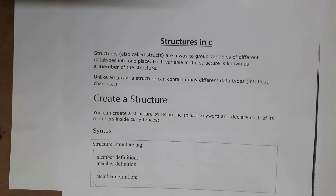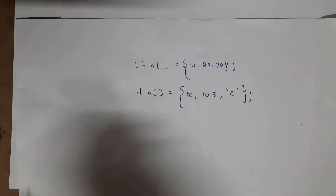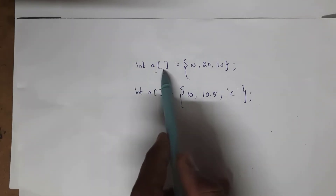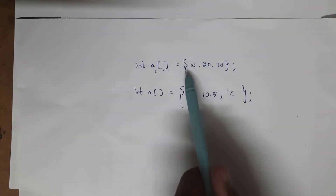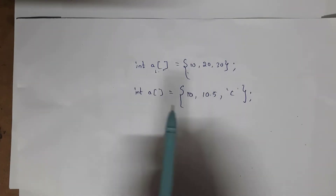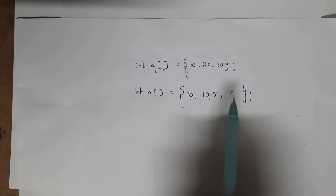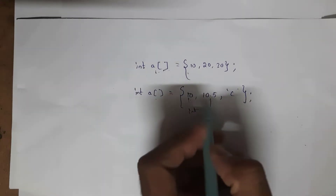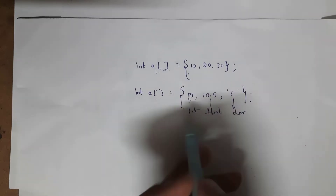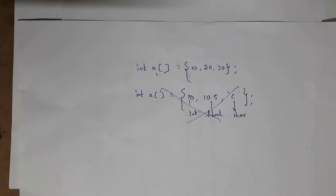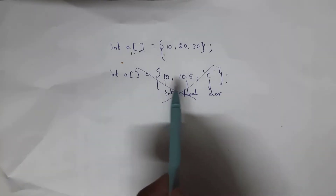If you consider arrays, in arrays we can store only similar type of elements. For example, if you write int a[], you can store only integer type of elements. I cannot store mixed type of elements. For example, int a = {10, 10.5, 'c'} — where 10 is integer, 10.5 is float, and 'c' is character — I cannot declare like this in arrays.